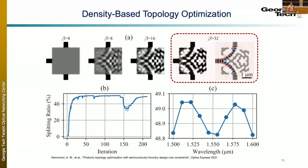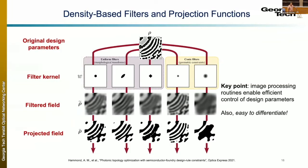Density-based topology optimization evolves pixels bit by bit until a binary structure performs well. As we saw yesterday, there are lots of different filters and projection steps required to get there, and it can be intimidating to choose the right ones — that's where designer intuition and art come in, requiring trial and error. But MEEP makes it easy to try different filter functions without manually computing the gradient of each filter kernel, making the prototyping path nearly streamlined.